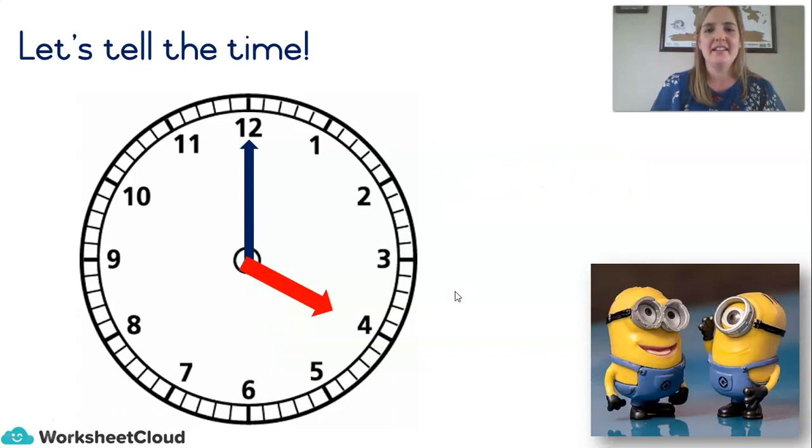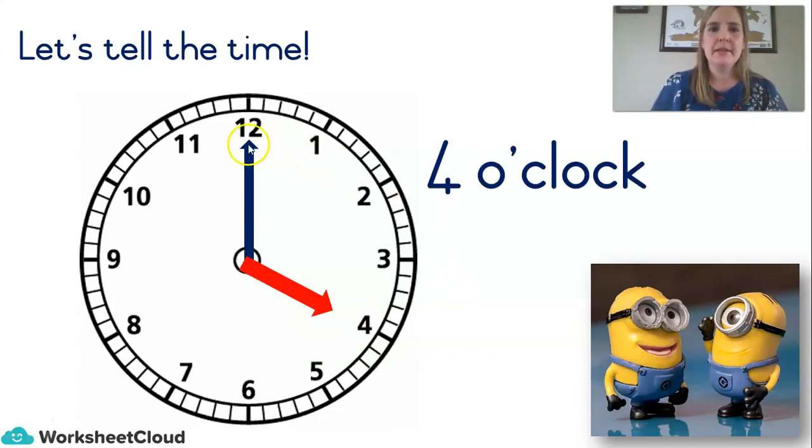4 o'clock. 4 o'clock. Has the minute hand moved? Nope. It's still right at the 12. If it moved even one little bit, we would have to say it's 1 minute past 4 or 5 minutes past 4, 5 past 4. You might have heard people talk like this. 5 past 4, 10 past 3. But today, we're just talking about o'clock. It hasn't moved. 4 o'clock. Next one.